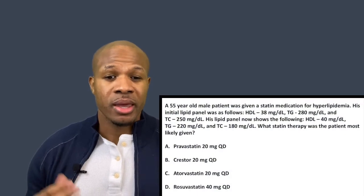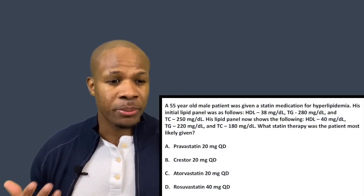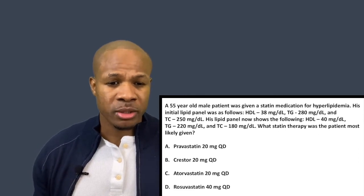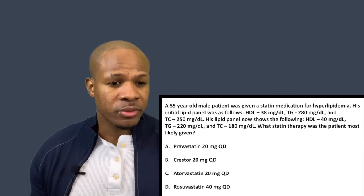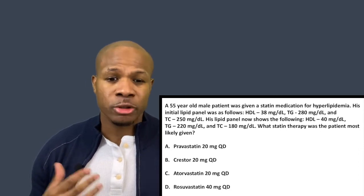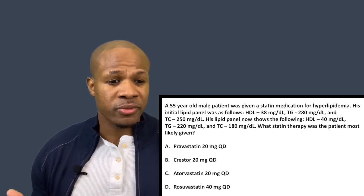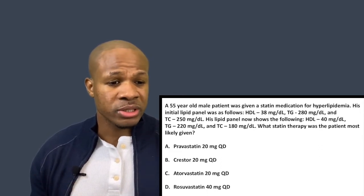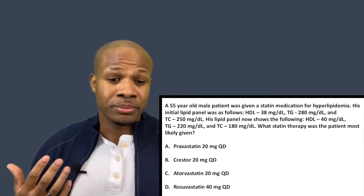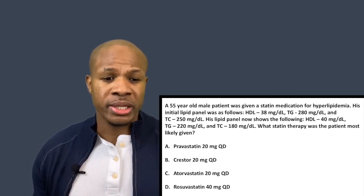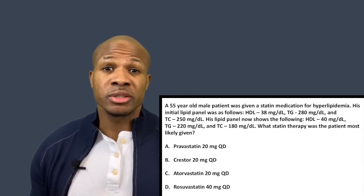Question one: a 55-year-old male patient was given a statin medication for hyperlipidemia. His initial lipid panel was: HDL 38, triglycerides 280, and total cholesterol 250. His lipid panel now shows HDL 40, triglycerides 220, and total cholesterol 180. What statin therapy was this patient most likely given?